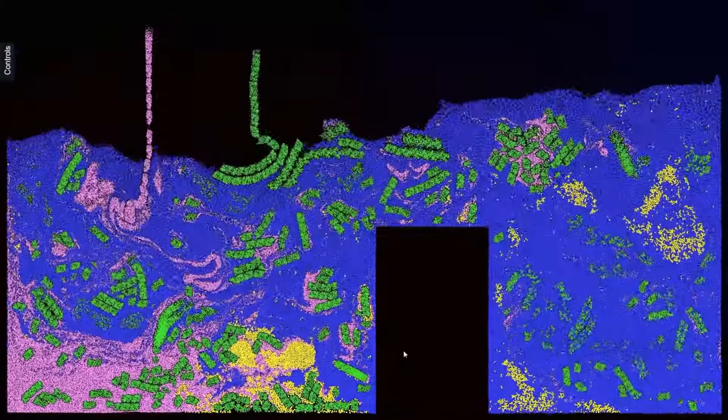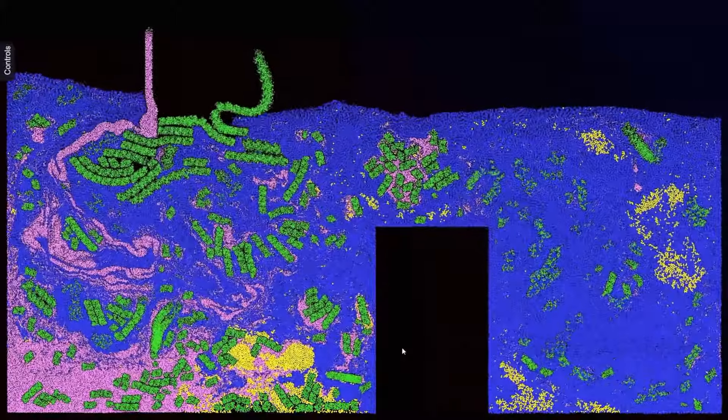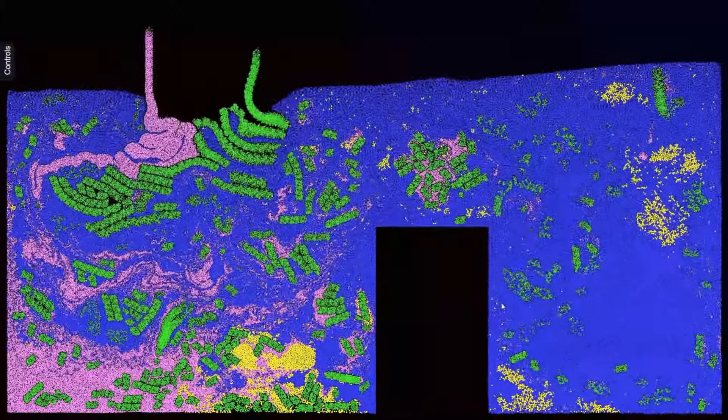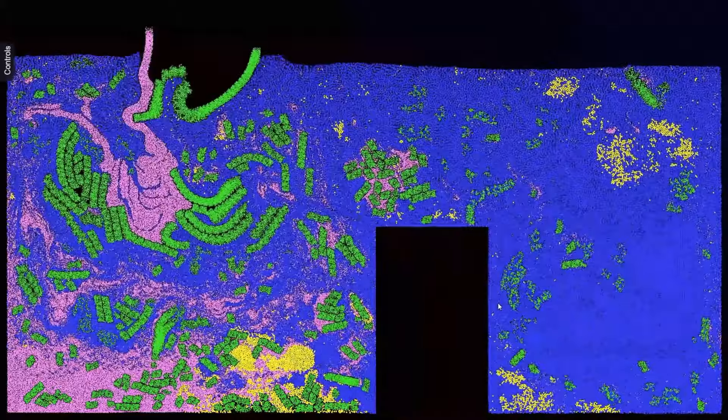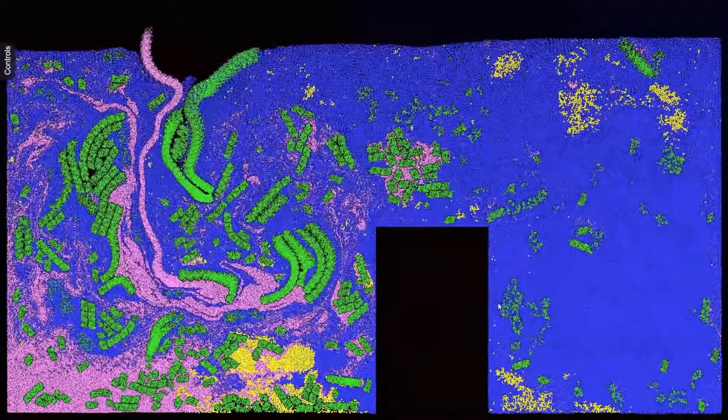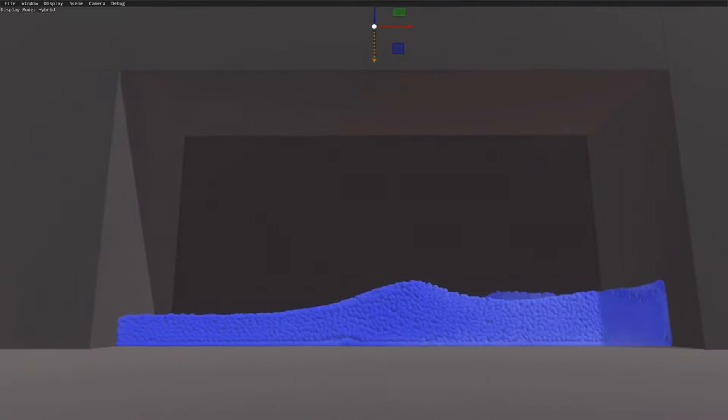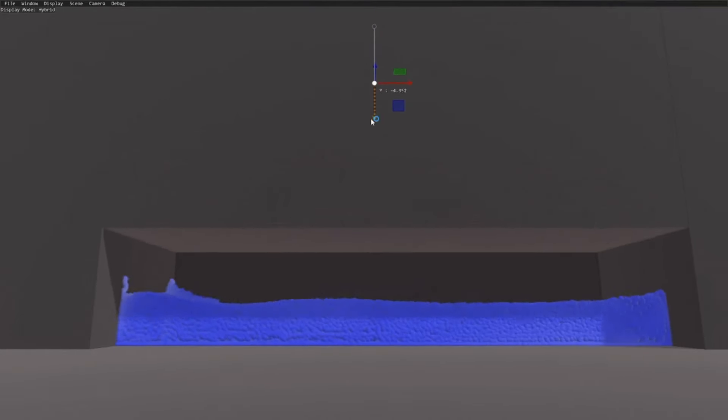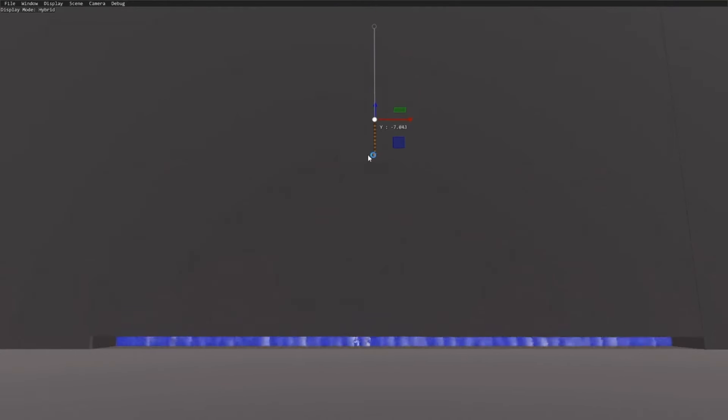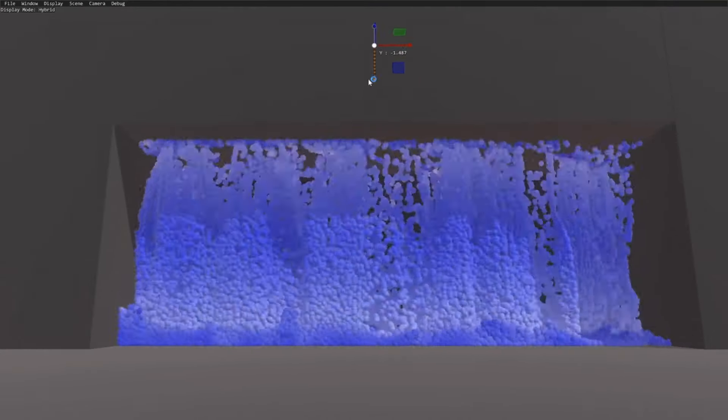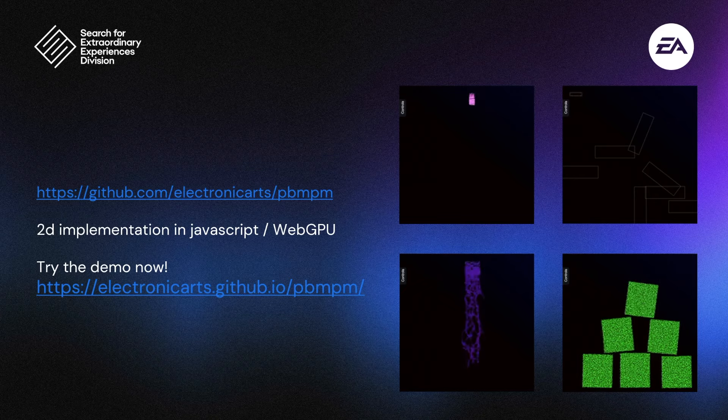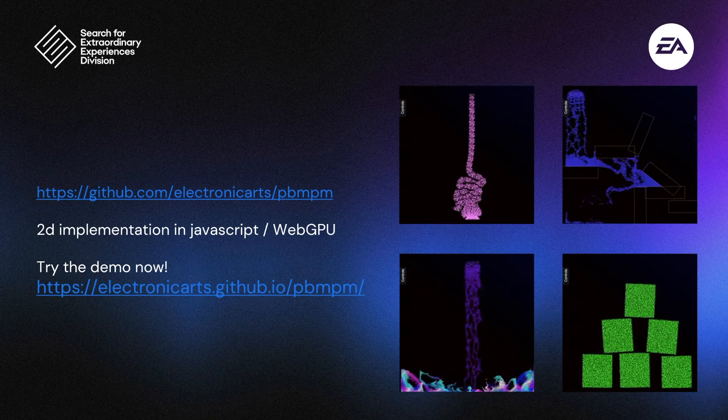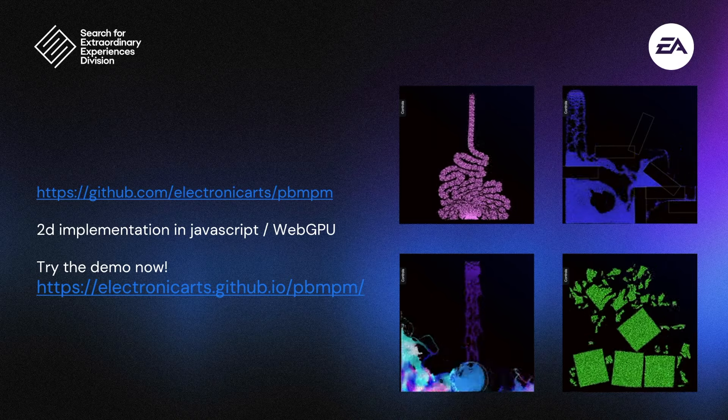The simulations you see in this presentation were all simulated in real-time and contain up to 500,000 particles. The 3D simulations are executed on the CPU in our internal framework Halcyon, and the 2D simulations are executed on the GPU in a framework that we're open sourcing. You can check out the project here and even run it in the browser right now if you want to.